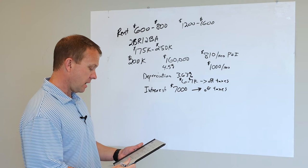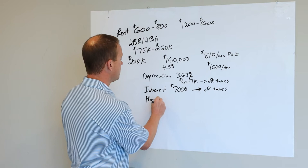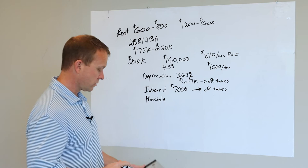Then in addition to that, you also have principal reduction. So you borrowed $160,000, about $7,000 per year is going to go towards taxes. The other portion is going to go towards principal pay down.